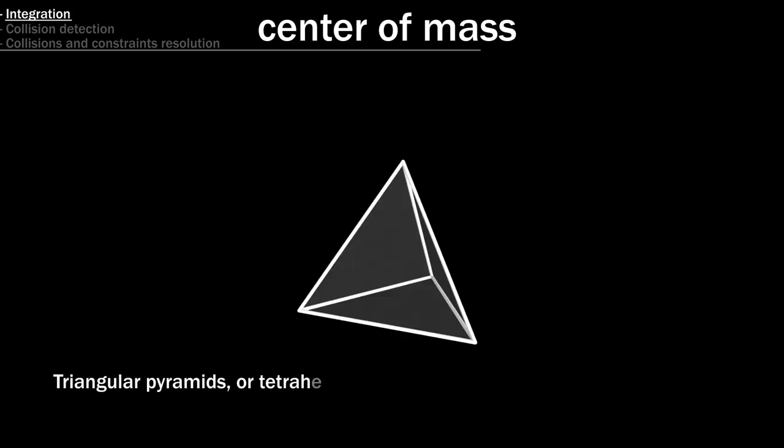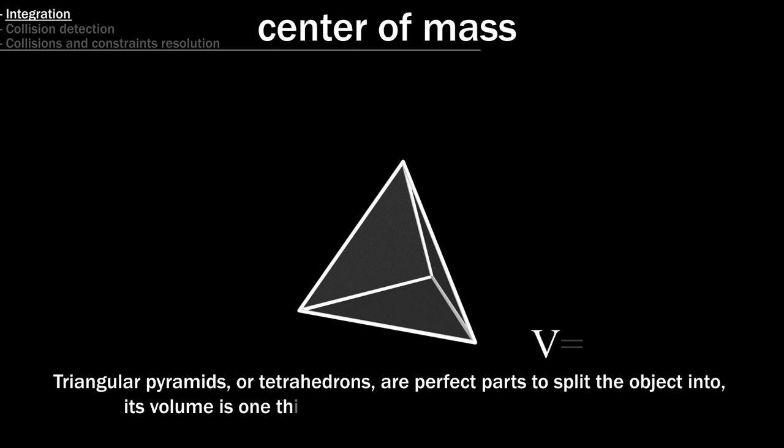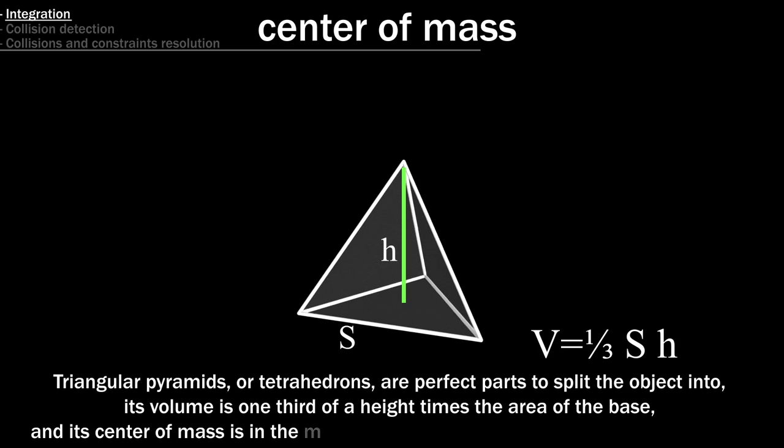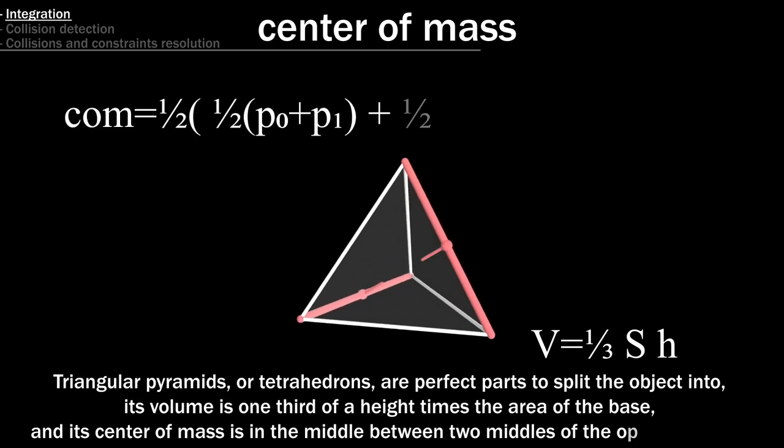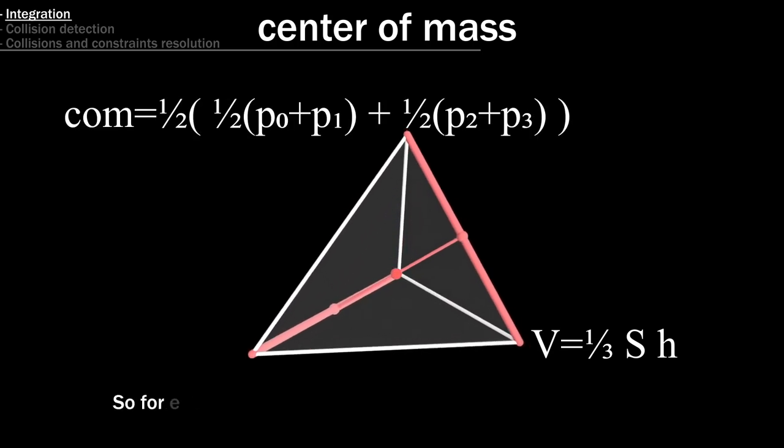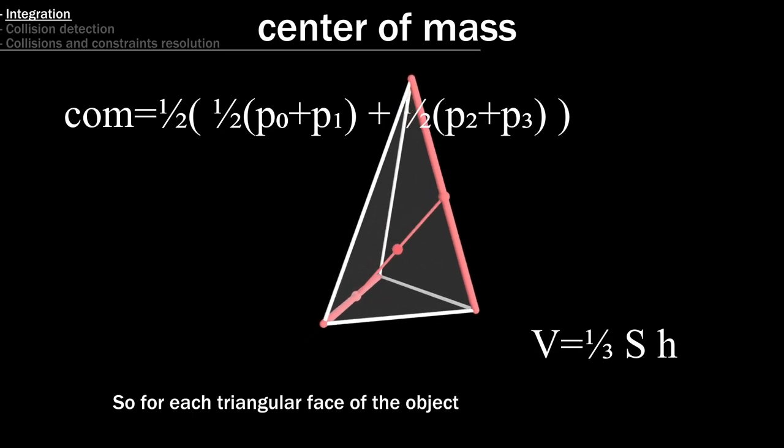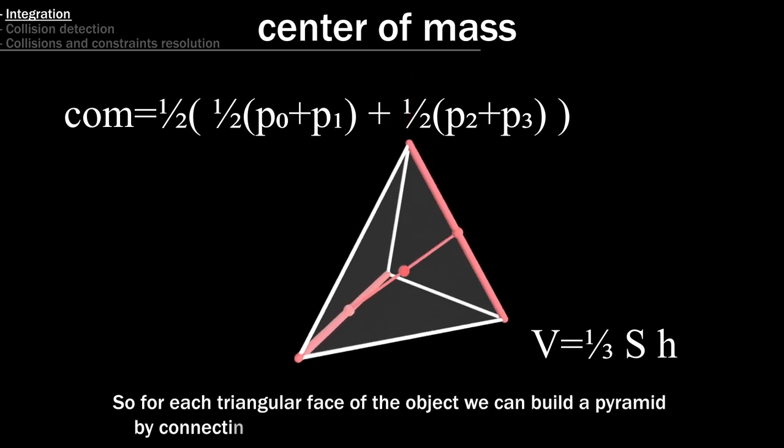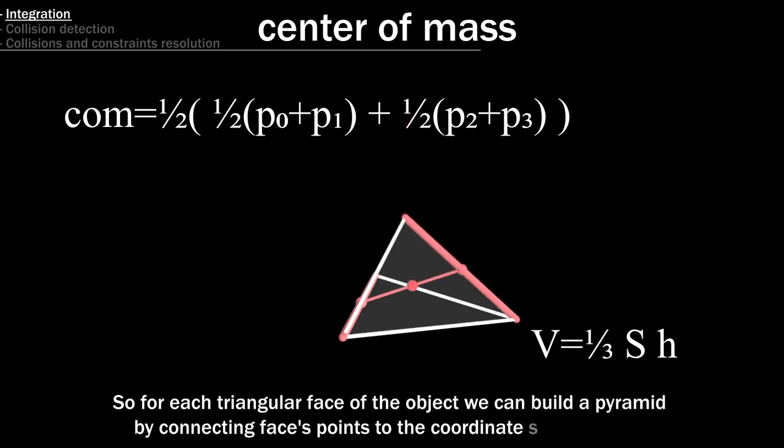Triangular pyramids, or tetrahedrons, are perfect parts to split the object into. Its volume is one third of a height times the area of the base, and its center of mass is in the middle between two middles of the opposite edges. So for each triangular face of the object we can build a pyramid, by connecting faces points to the coordinate system origin.